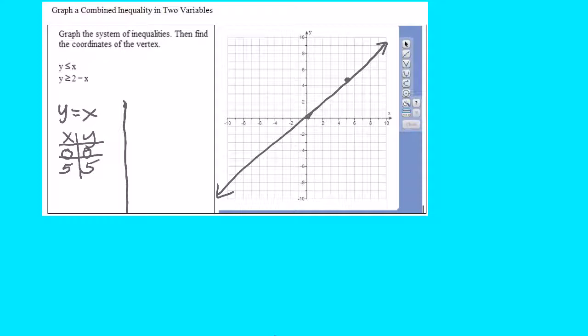Okay, now I go back to the inequality y is less than or equal to x. I find a test point, which is usually 0, 0, but it cannot be 0, 0 here because notice the line goes through 0, 0. So what am I going to do? I can choose any other point.